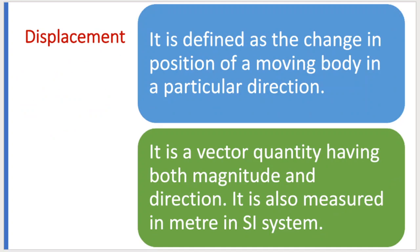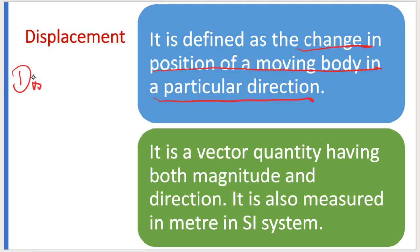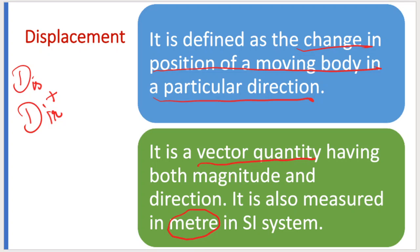Displacement is the change in position of a moving body in a particular direction. Simply put, distance with direction is displacement. Since direction is involved, displacement is a vector quantity. Both distance and displacement are measured in meters — that is their similarity — but the concepts are different.